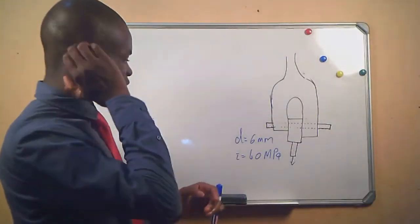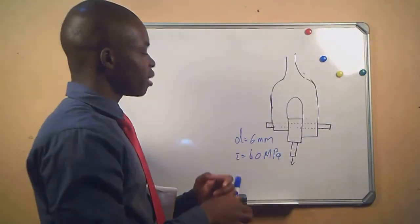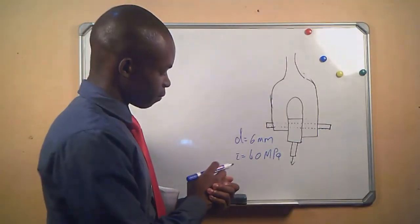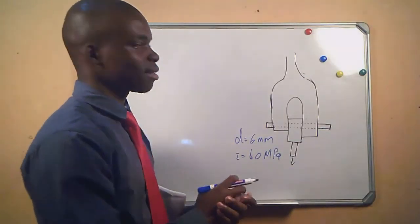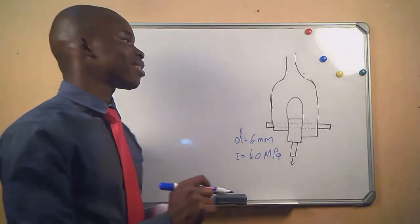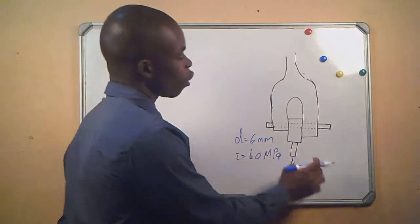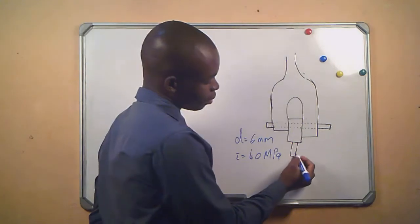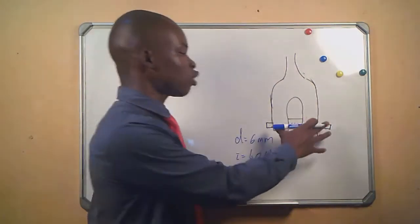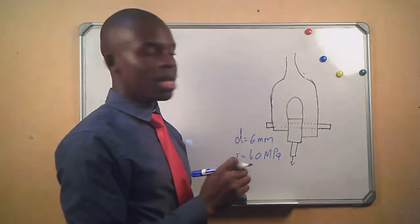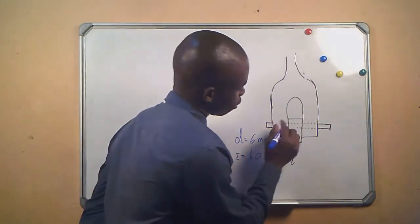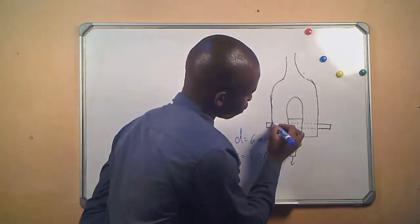So this is what we are given: we are given the diameter and we are given the stress, which is the stress that this device must not exceed. Now we know that if this pin, since our main focus is on the pin, let's make a cross-section here.